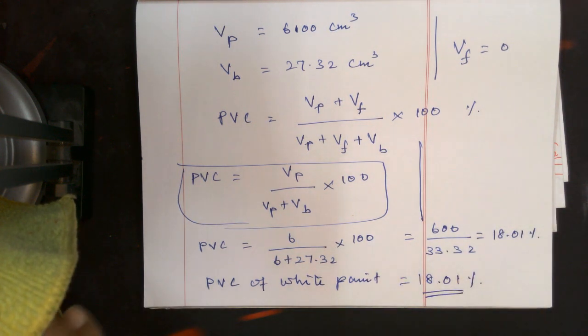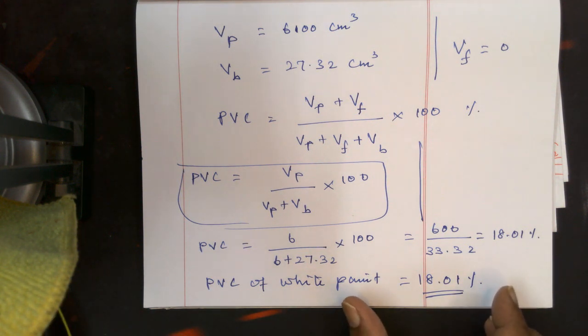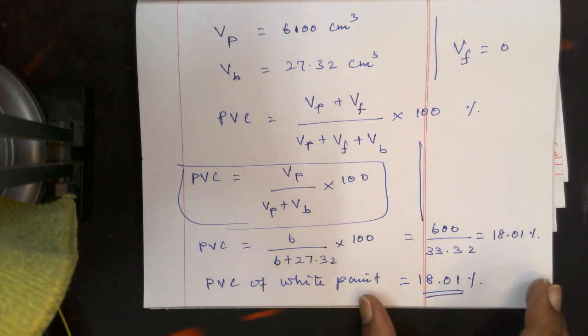This is the way you have to calculate. And based on the percentage, we will come to know that it belongs to gloss paint category. This is the way you have to calculate the pigment volume concentration. Usually for high glossy paints, it ranges from 15 to 25. So this is 18, therefore this belongs to high glossy white top coat.